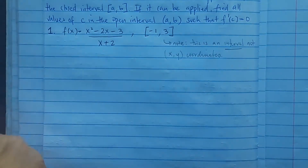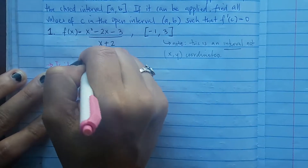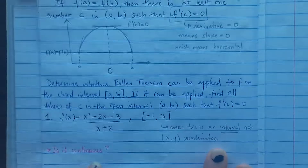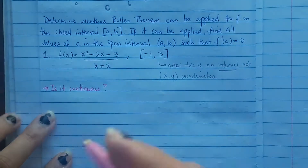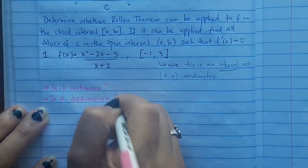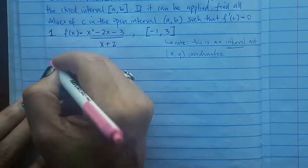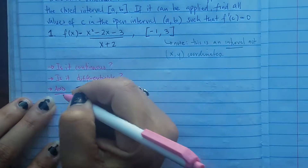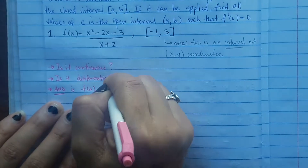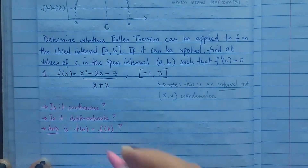First: is it continuous? The only place it's not continuous is when x equals negative two, because that makes the denominator zero and we can't divide by zero. So it's not continuous at x equals negative two. But that doesn't matter because negative two is not in our interval, which goes from negative one to three. So is it continuous and differentiable? And is f of a equal to f of b?